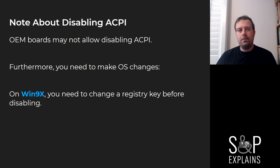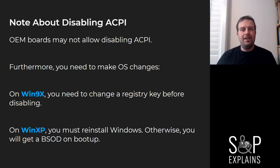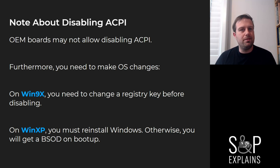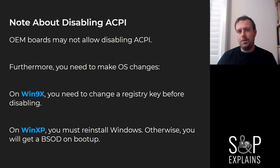On Windows 98, for example, you need to change your registry key before you change the BIOS setting. On Windows XP, you actually have to reinstall your operating system if you turn ACPI on or off. There are people who say you can get around it in various ways, but I don't really trust that — I think you'll more likely break your installation anyway.